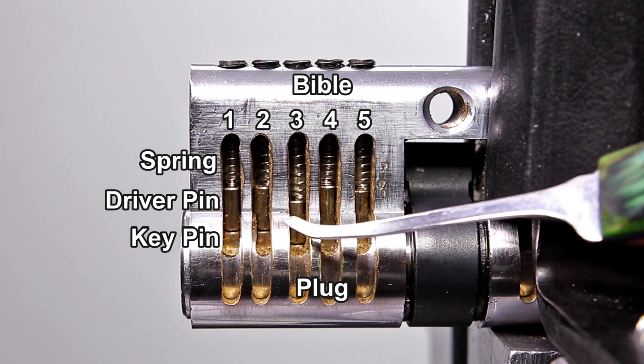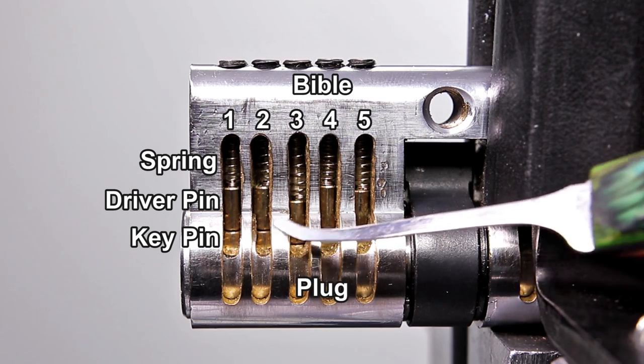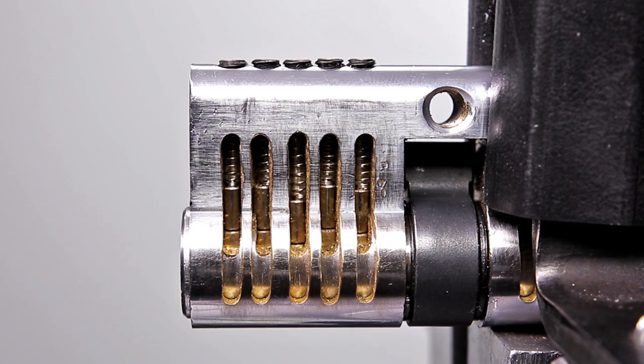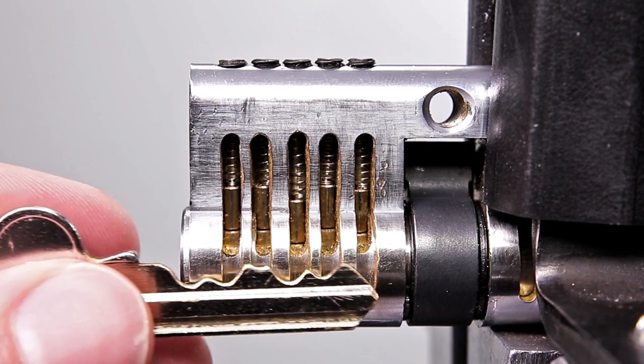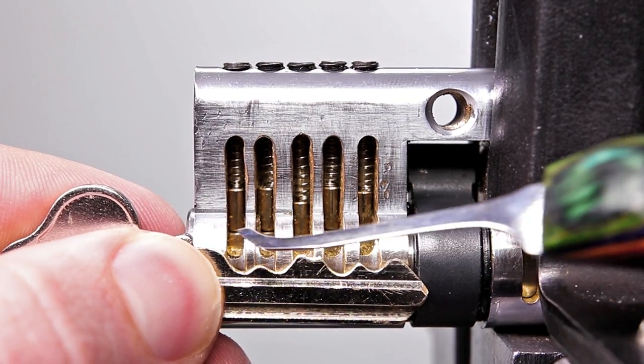When the driver pin is sitting recessed in the plug, it is physically obstructing the plug from turning over, and that keeps the lock in the locked state. When you want to get the lock opened up, you're going to need to take the key. The key is going to line up perfectly with each chamber.